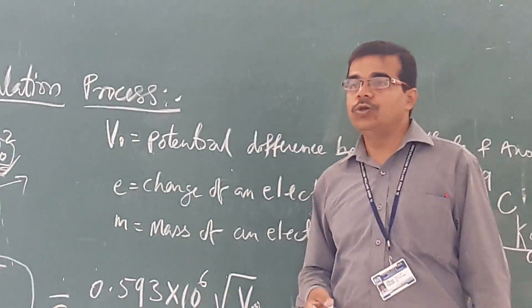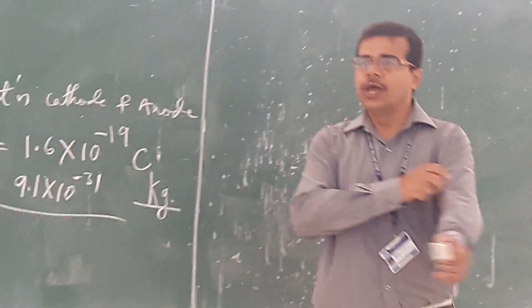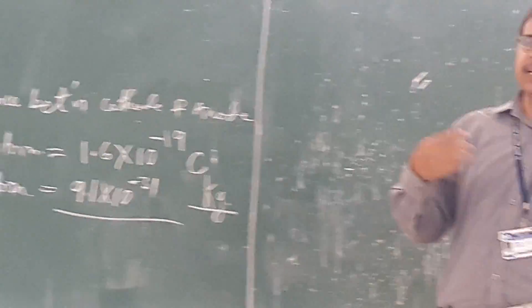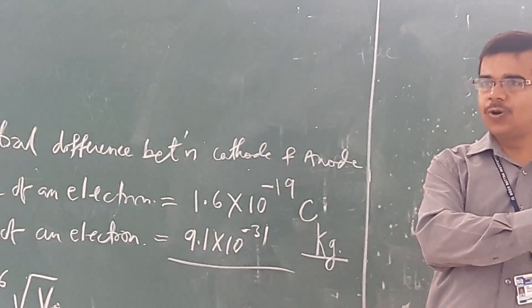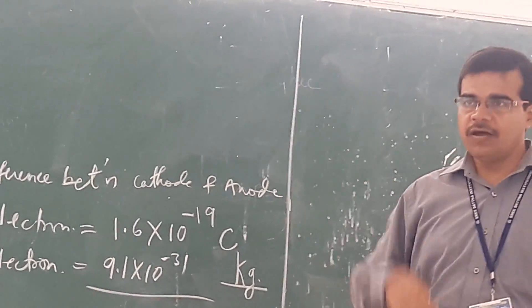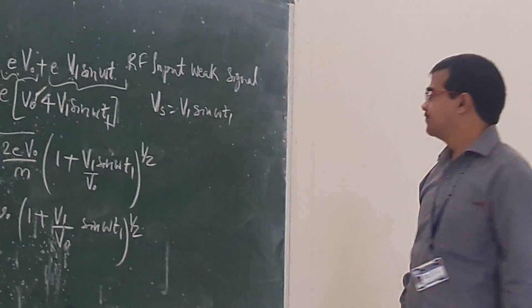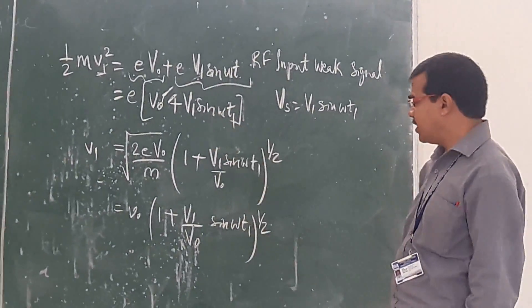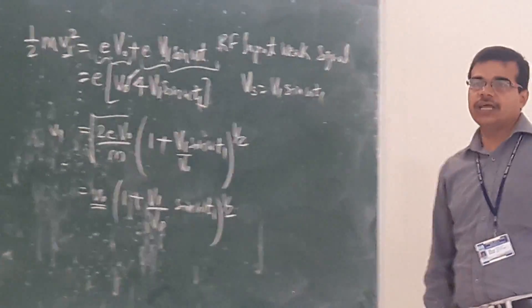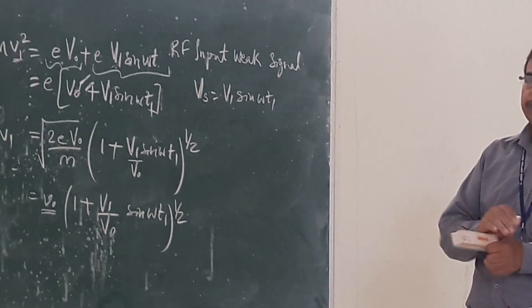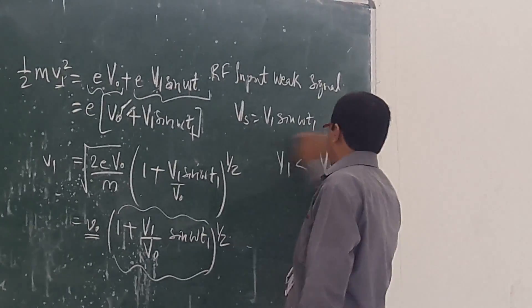At the buncher cavity, you will have the RF input signal that is to be amplified. When the RF signal is introduced, the velocity of the electron will also change. The initial velocity before reaching the buncher cavity is v₀. You will see that V₁, the amplitude of the RF signal, is much less than V₀, the DC voltage of nearly 300V.